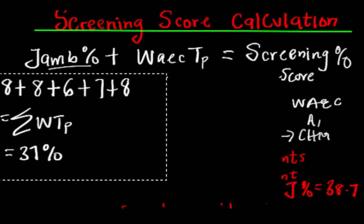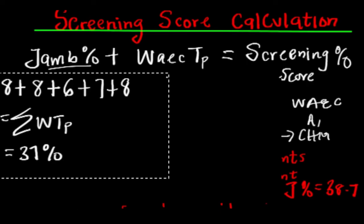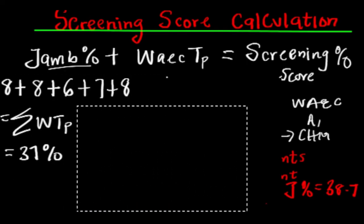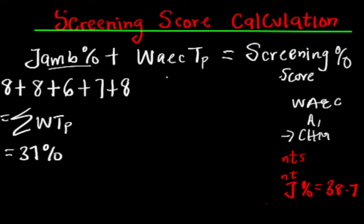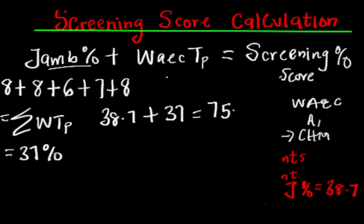We've already calculated the WAEC total point which is 37. Now let's calculate the screening score. The UTME percent is 38.7, plus the WAEC total point is 37. Adding both together: 37 + 38.7 = 75.7%. So the student's screening score is 75.7%.